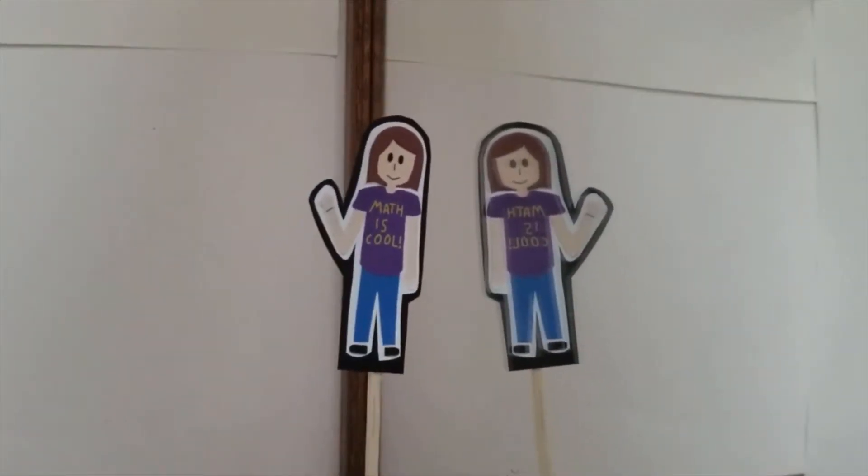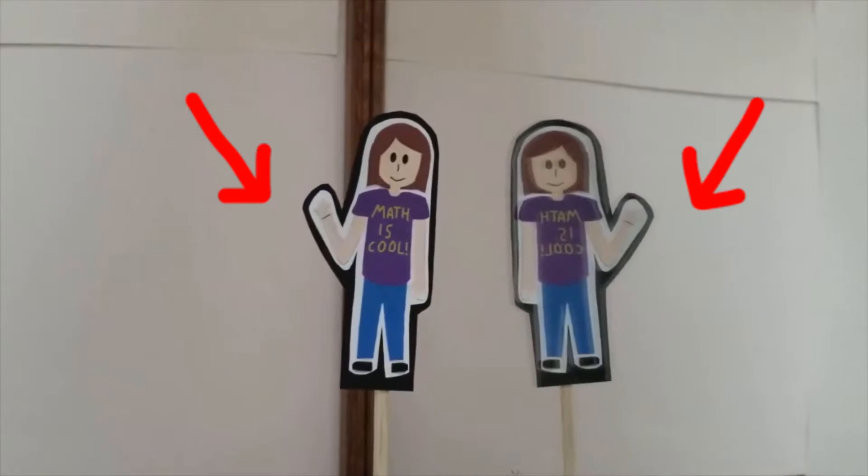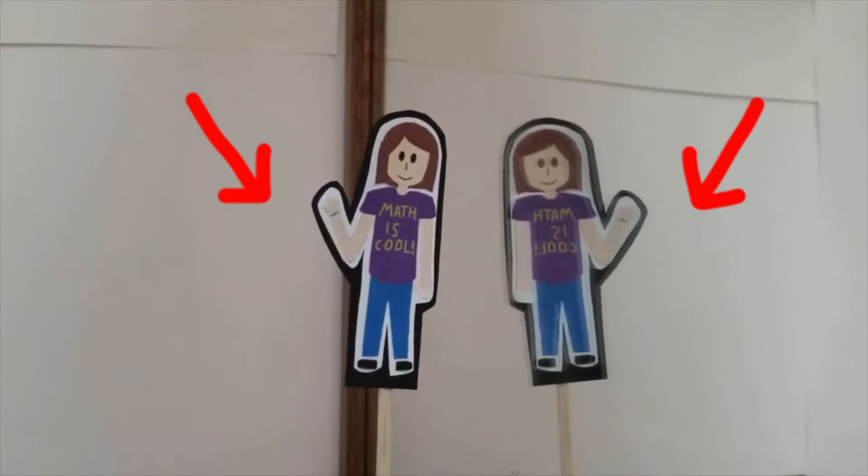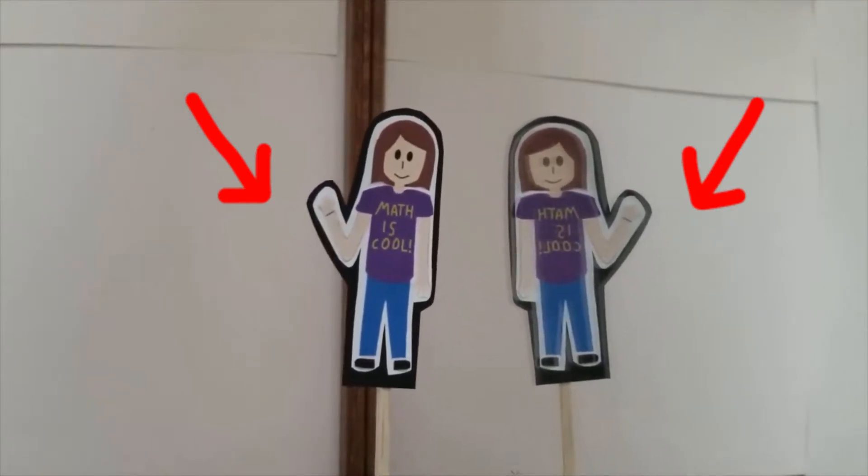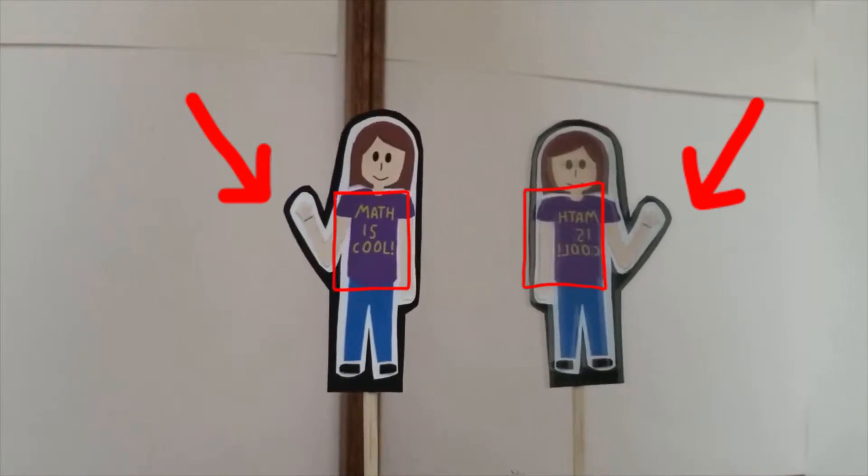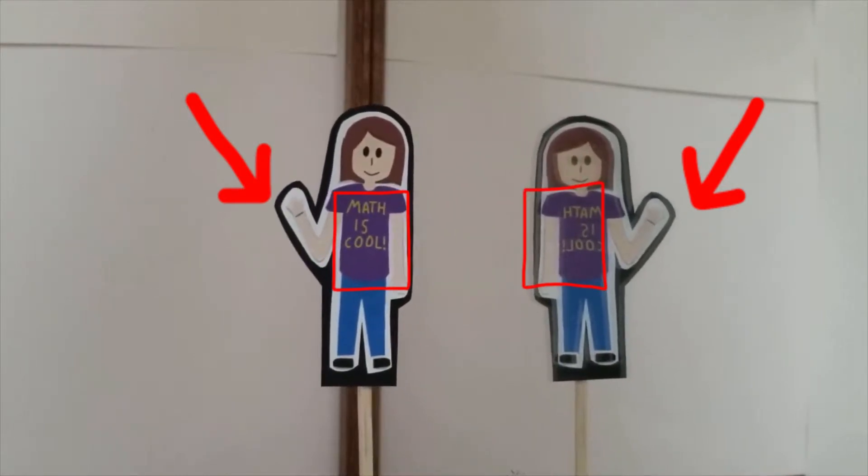But does the girl in the mirror really look the same as me? Well, she has a bracelet on her left wrist while I have one on my right. Also, the words on her shirt are backwards. If everything is the opposite, how can it be the same picture?